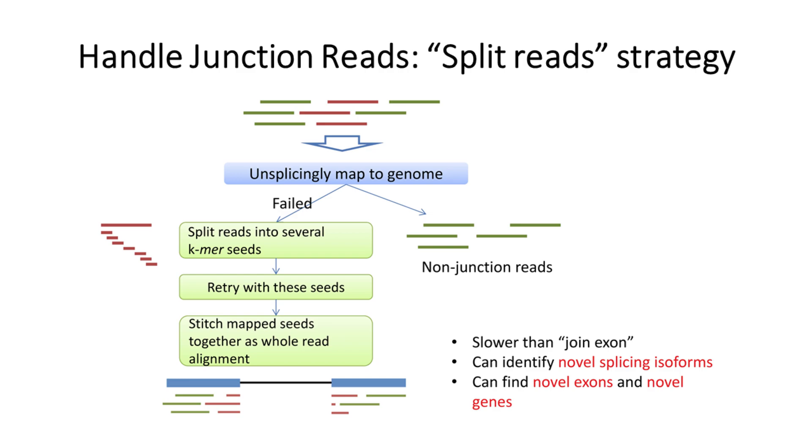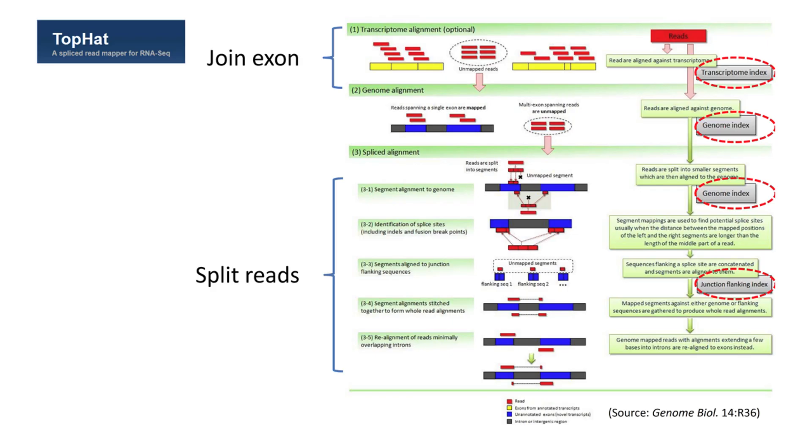Compared with the previous join exon strategy, the split read strategy is slower as it needs to map seeds which are shorter than reads. However, this strategy does not depend on prior exon annotations and can discover new exons and even new genes. In fact, current common RNA-Seq tools often combine these two strategies together to balance the sensitivity and speed.